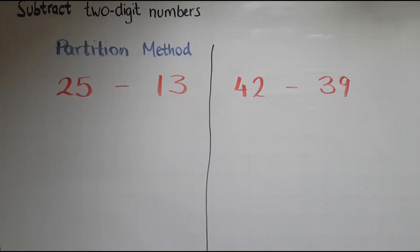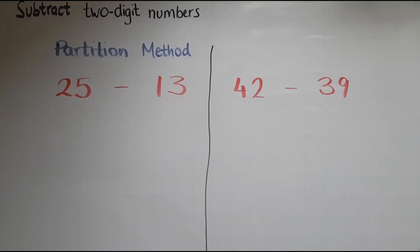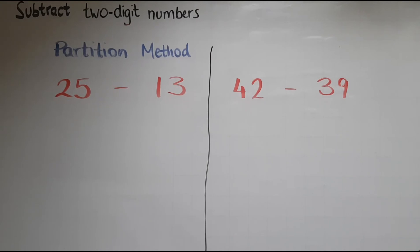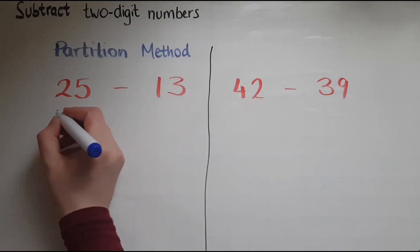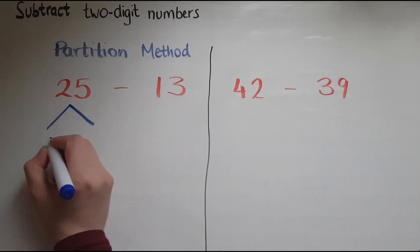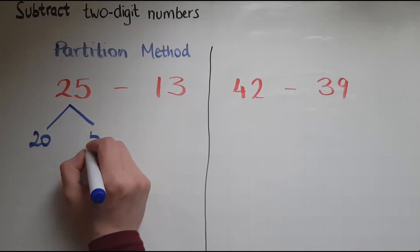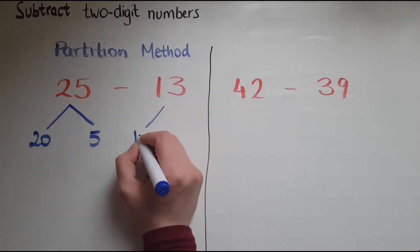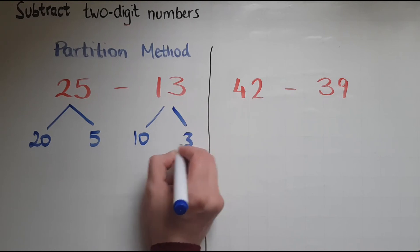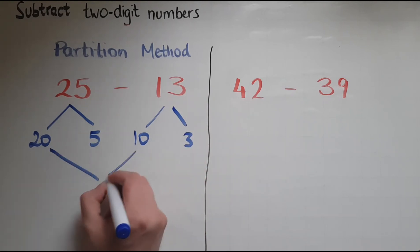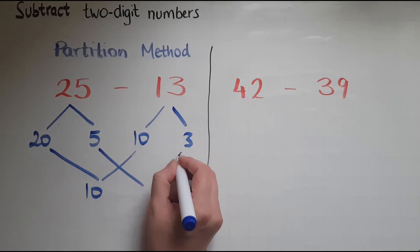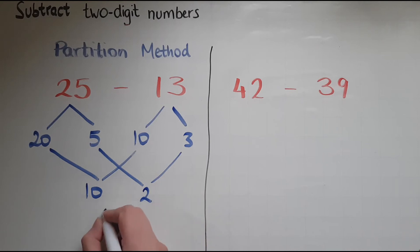Now look at how to subtract two-digit numbers using the partition method. So I will split 25 into 20 and five and 13 into 10 and three. So 20 take away 10 leaves me with 10. Five take away three gives me two. So my answer is 12.